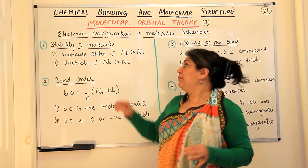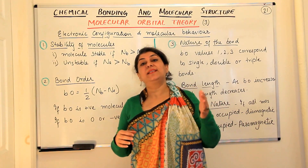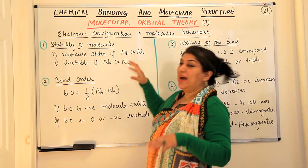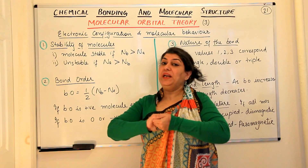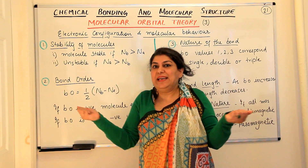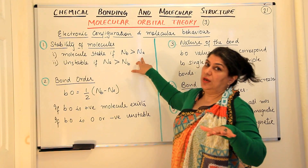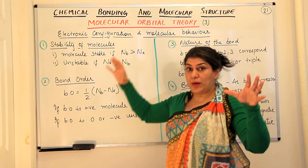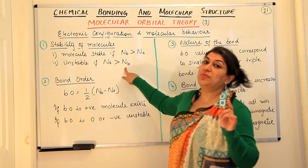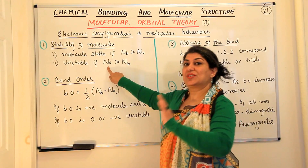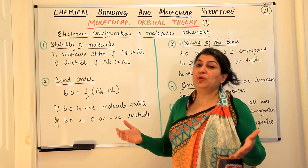We get an idea about stability by calculating the number of bonding and anti-bonding electrons. If Nb is the number of electrons in bonding molecular orbitals and Na is the number in anti-bonding molecular orbitals, then more electrons in bonding orbitals leads to stability, because those electrons are present between the two nuclei leading to attraction. If Na is greater than Nb, the molecule would be unstable.